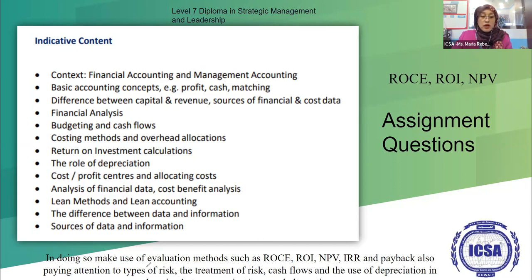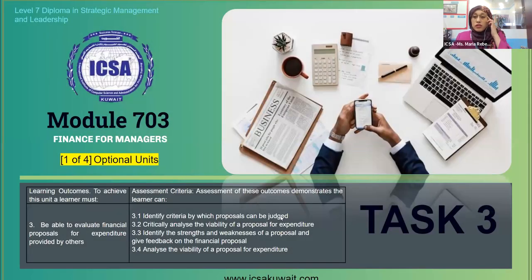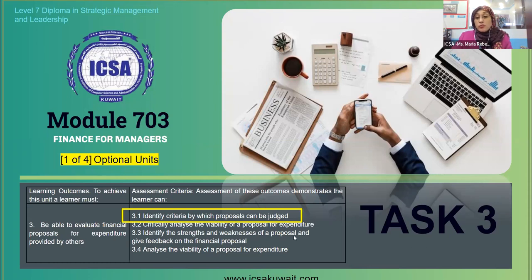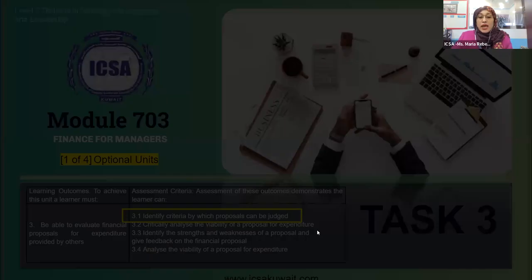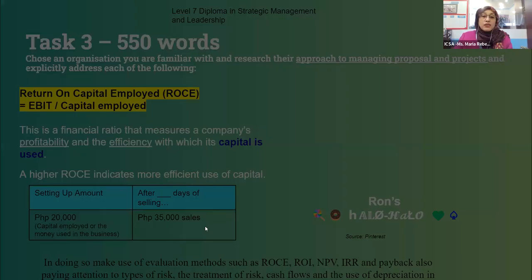You will not be able to make an evaluation without being able to understand these things, because in your assessment criteria you have to make an evaluation, and to be able to evaluate you're going to use these tools. This will also give you a better understanding of the Excel sheets I have uploaded in the portal — those are just templates for you to use to easily calculate them. Before we go into identifying the criteria by which a proposal can be judged, we have to first take a look at the financial metrics.